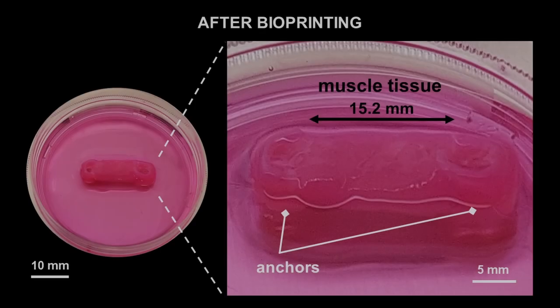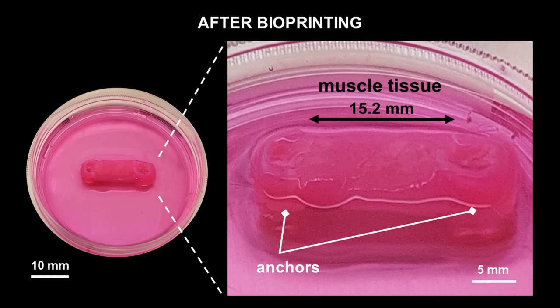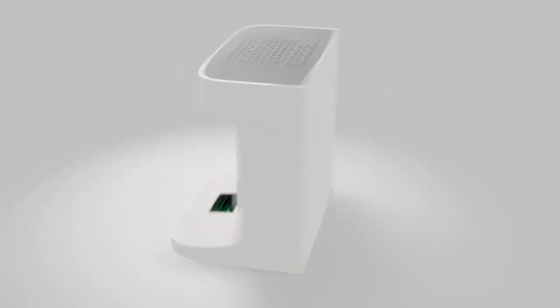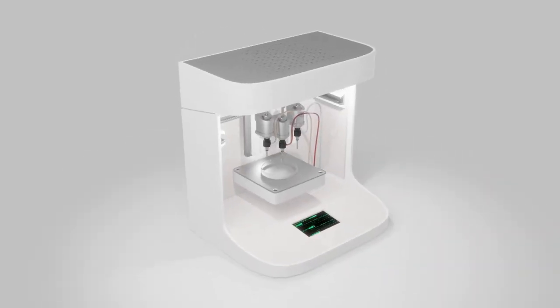We engineered a centimeter scale skeletal muscle tissue that enables perfusion of the tissue, even when combined with anchors, and we realized it via extrusion-based multi-material bioprinting, which allowed us to precisely position multiple inks and fabricate the whole structure in one go.